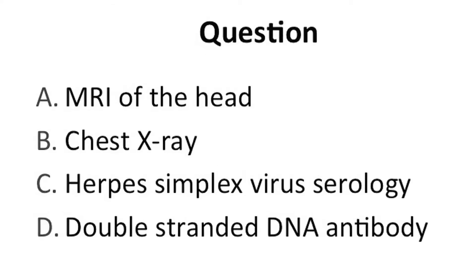Double-stranded DNA — can autoimmune diseases, can lupus cause uveitis? The answer is yes. But if I wanted to work up lupus, would I get a very specific test like double-stranded DNA? Probably not — I'd probably start off with an ANA. So the right answer is chest x-ray. If I were to say this is a 35-year-old African American female, what would we think about? Sarcoid.